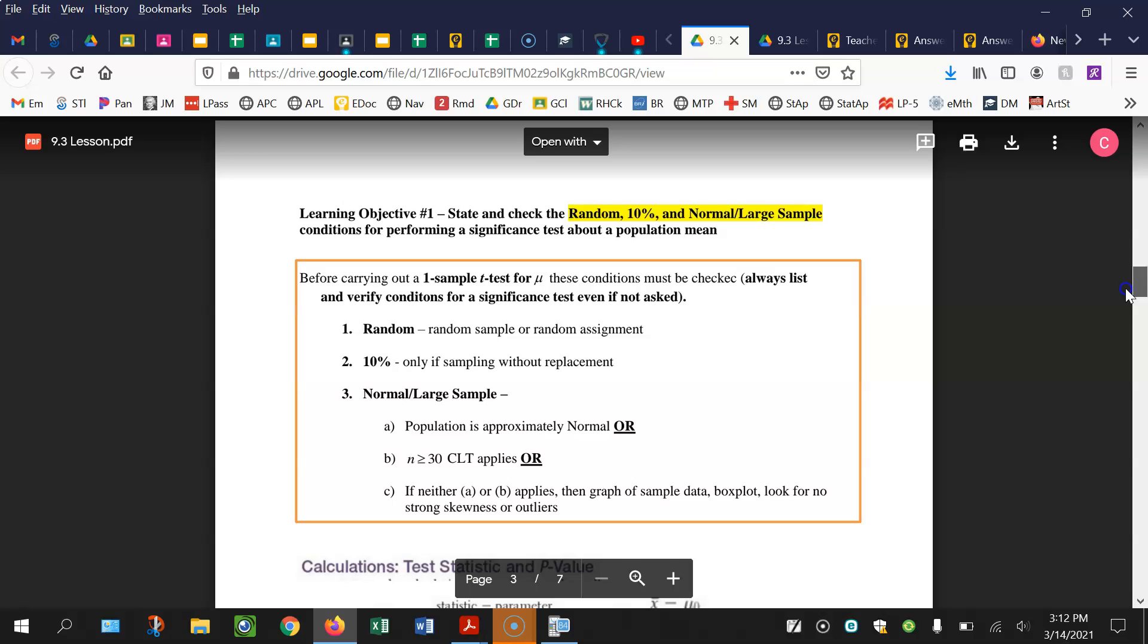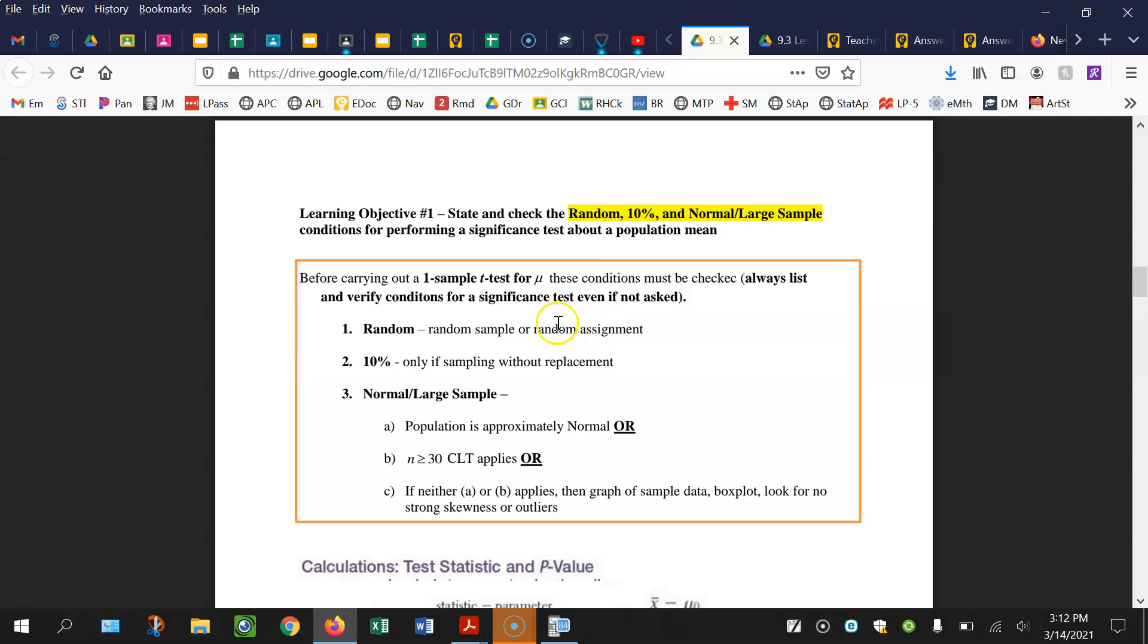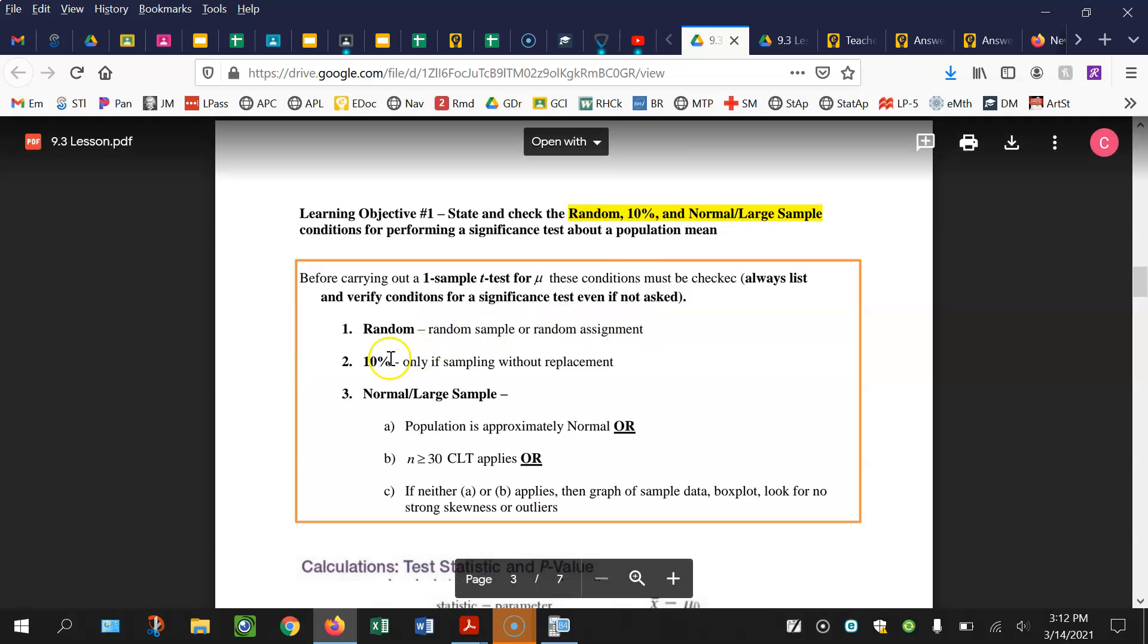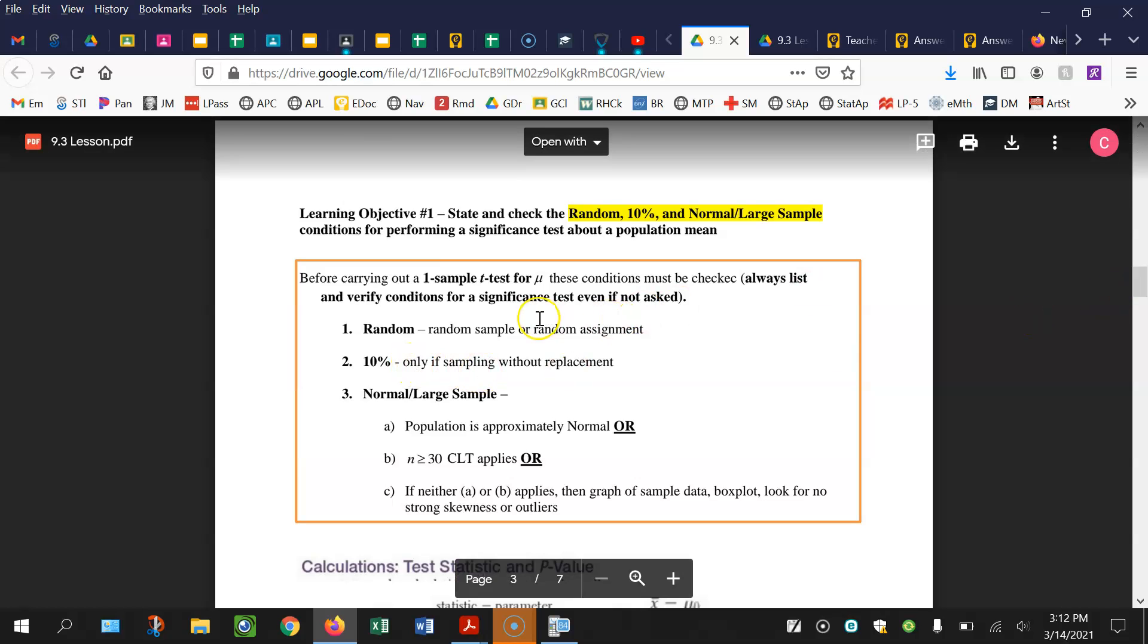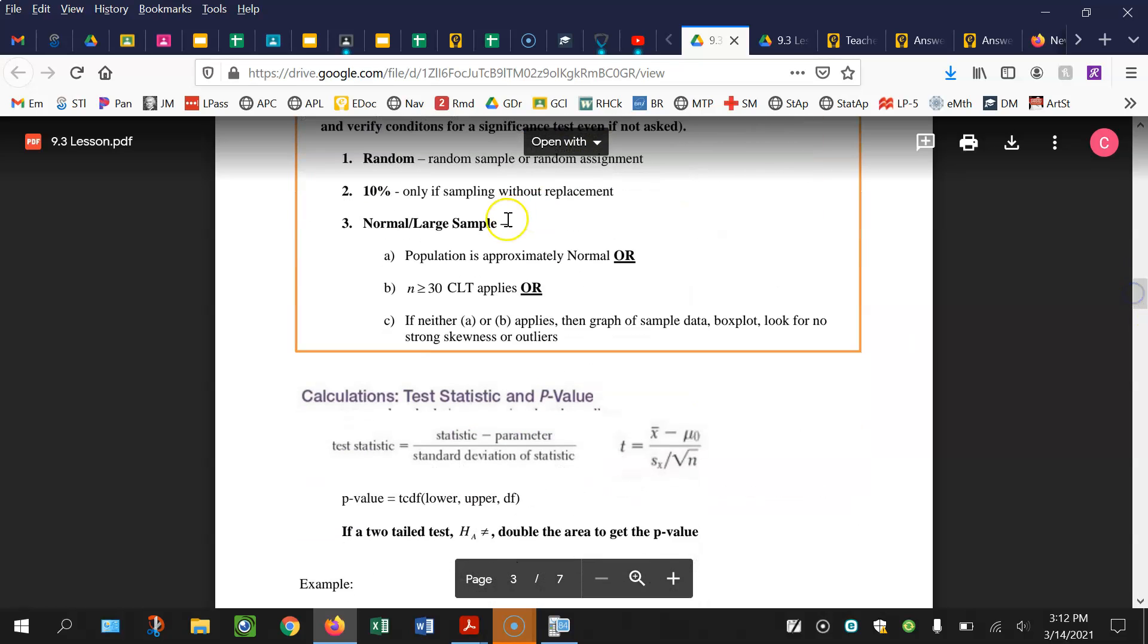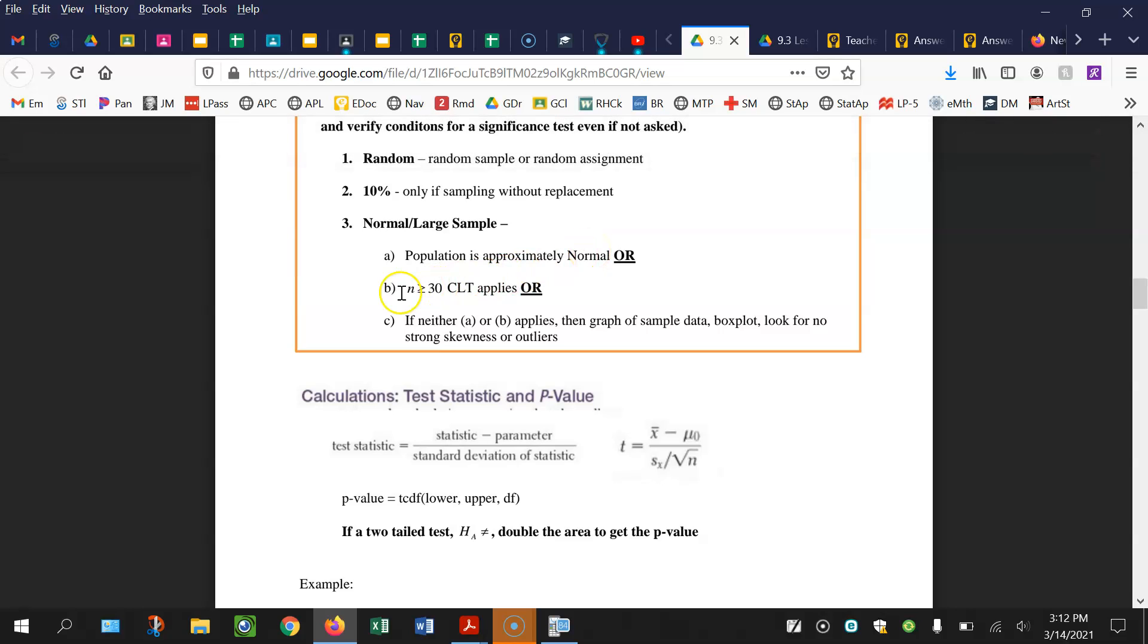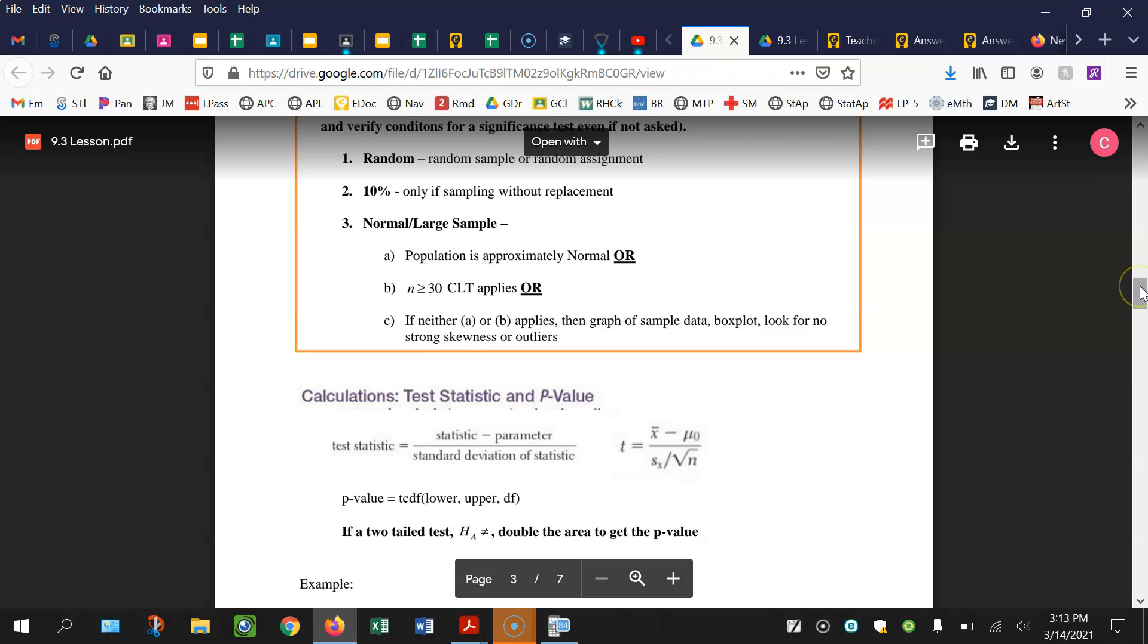First learning objective is going through those conditions. You're only going to have one group, so forget about random assignment here, it's just going to be a random sample. 10% you will need because we're not going to be looking at an experiment if we just have a one-sample t-test. Then the normal large sample condition: your population shape is approximately normal, the sample size is at least 30 which means the central limit theorem applies, or neither are true and you're going to have to create a box plot or dot plot to look for strong skewness or outliers.